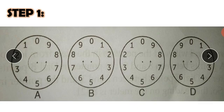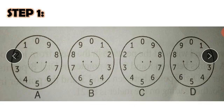If one dial moves counterclockwise, then the adjacent one will move clockwise, then counterclockwise, and clockwise. Dials A and C move counterclockwise, while dials B and D move clockwise.